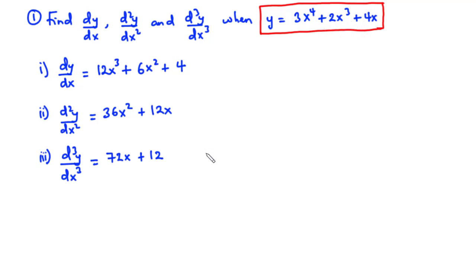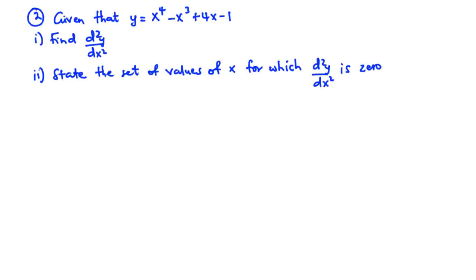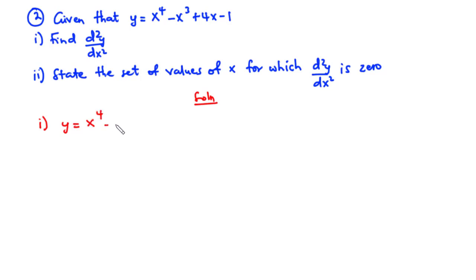Now let's solve our second example. For the second question, given that y is equal to x⁴ minus 4x³ plus 4x minus 1, we need to: (i) find the second derivative of y with respect to x, and (ii) state the set of values of x for which d²y/dx² equals 0.